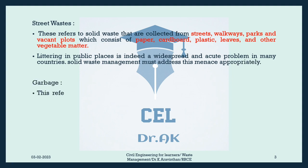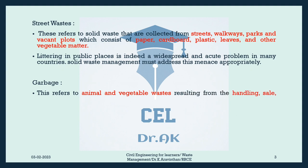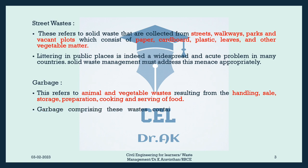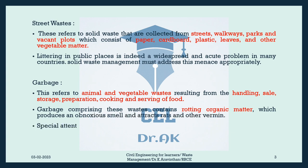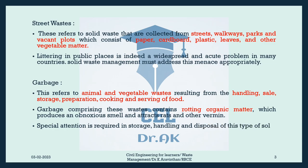Garbage: This refers to animal and vegetable wastes resulting from the handling, sale, storage, preparation, cooking, and serving of food. Garbage comprising these wastes contains rotting organic matter, which produces an obnoxious smell and attracts rats and other vermin. Special attention is required in storage, handling, and disposal of this type of solid waste.